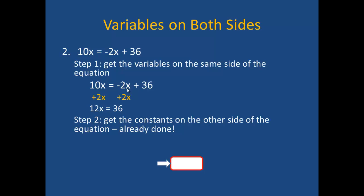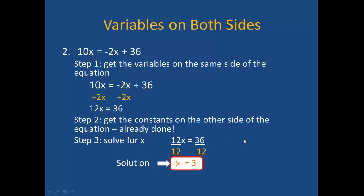Normally my second step would be to get the constants on the other side of the equation, but in this case I already have constants on only one side, so I am a step ahead. Therefore, my last step will be to divide both sides by 12 in order to get x by itself, and that will give me the solution x equals 3.